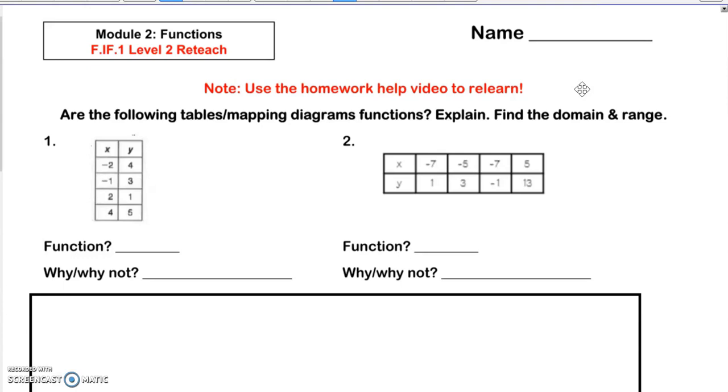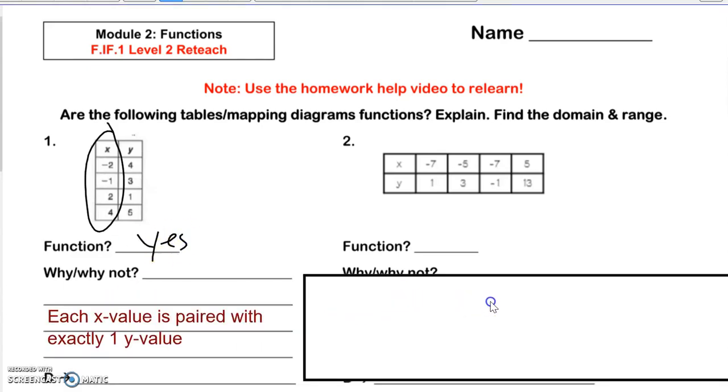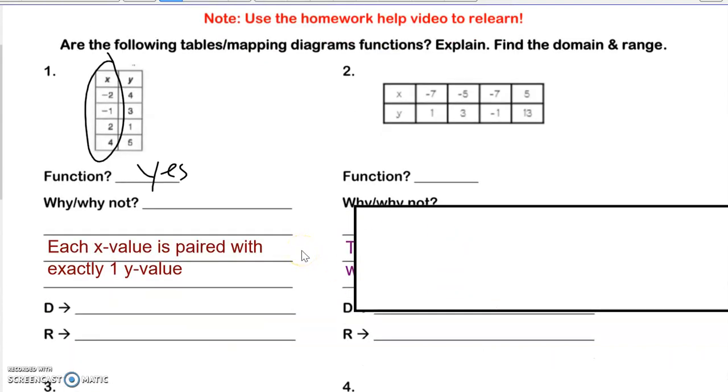So again, we're looking for all x values to be different. If I'm looking here, I want to be looking at this column right here to see if they're all different. I see a negative 2, negative 1, 2, and 4. So I would say yes, this is a function. And I would say each x value is paired exactly with one y value. Keep in mind, the domain is x and the range is y. You're going to put them in order from least to greatest. So it's negative 2, negative 1, 2, and 4.